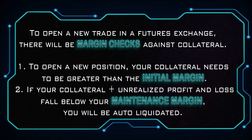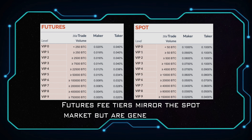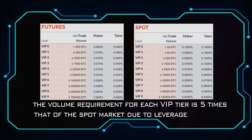To open a new trade in the futures exchange, there will be margin checks against collateral. First, in order to open a new position, your collateral needs to be greater than the initial margin. Second, if your collateral plus unrealized profit and loss fall below your maintenance margin, you will be auto-liquidated. Futures fee tiers mirror the spot market but are generally lower. Please note that the volume requirement for each VIP tier is 5 times that of the spot market due to leverage provided.